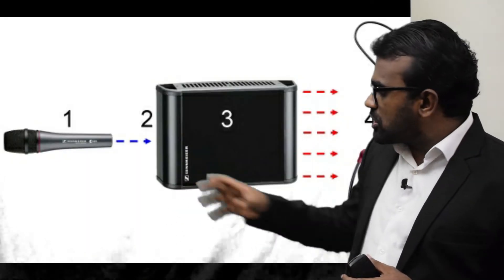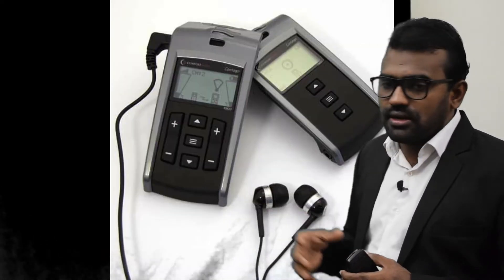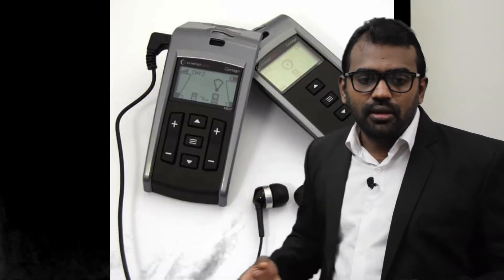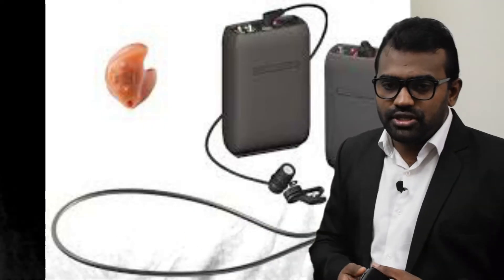If we are moving to the basic parts of an ALD, each ALD has at least three components: a microphone, a transmission technology, and a device for receiving the signal (a receiver) that brings the sound to the ear.